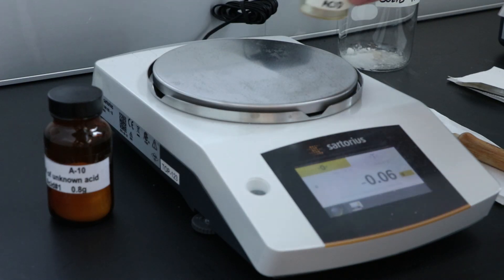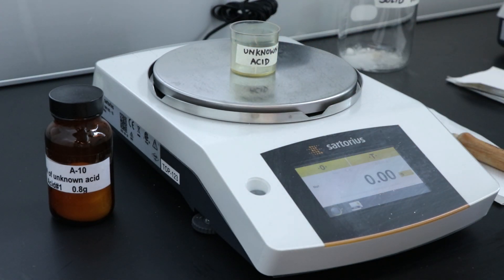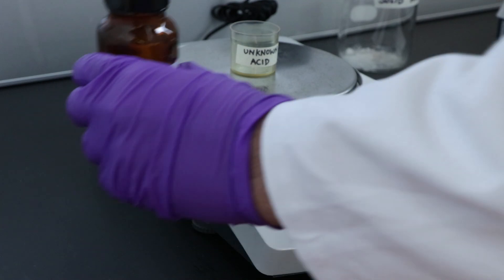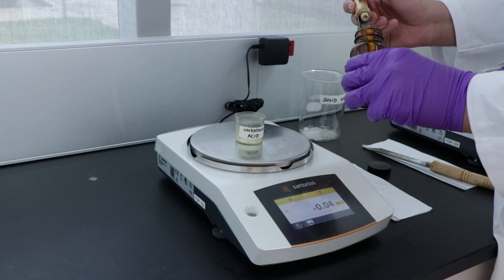First, in order to prepare the standard solution, weigh by difference the appropriate amount of unknown acid as indicated on the acid bottle. Remember to tare the top loading balance before adding any acid to the weighing bottle.